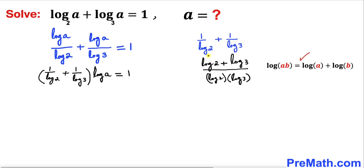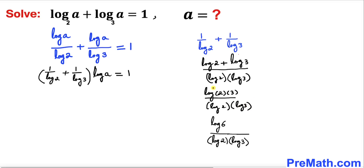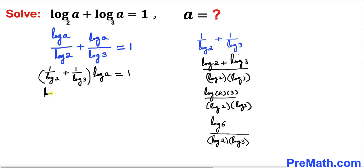Now we apply the product rule to the numerator: log 2 plus log 3 equals log of 2 times 3, which is log of 6. So the expression inside the parentheses simplifies to log 6 divided by (log 2 times log 3). Our equation becomes: log 6 divided by (log 2 times log 3) times log a equals 1.